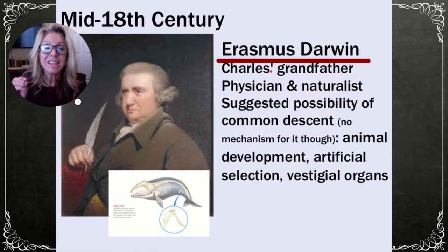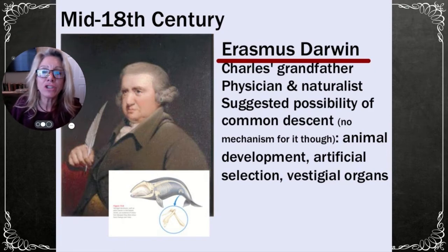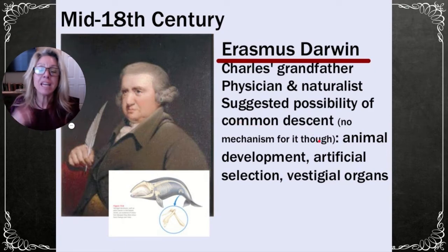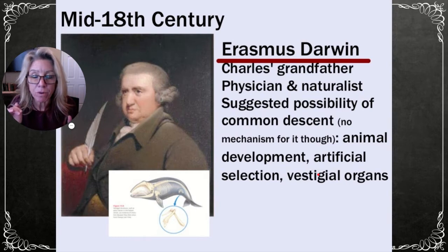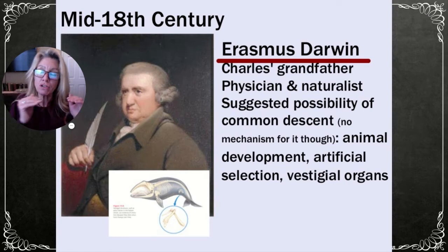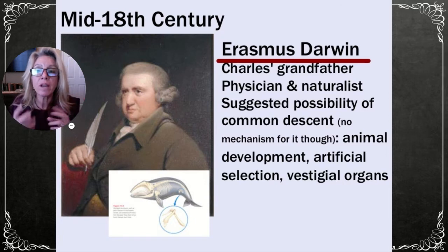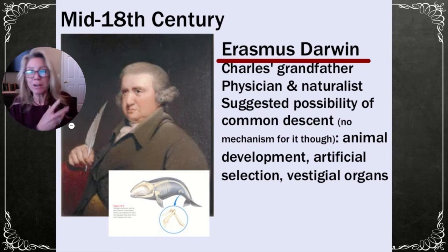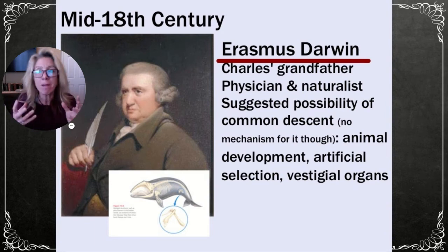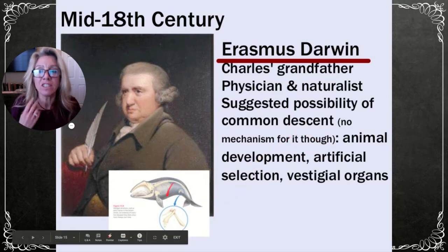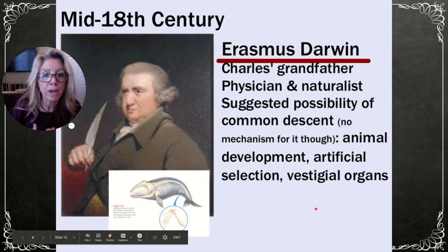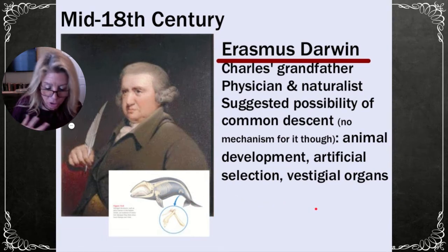Erasmus Darwin, Charles's grandfather, was a physician and naturalist who thought there was a possibility of common descent but did not have a mechanism for it. He looked at animal development and vestigial structures — like the bone structures in whales — but couldn't propose how that change occurred.